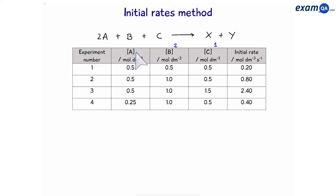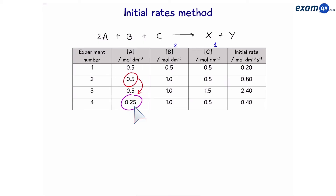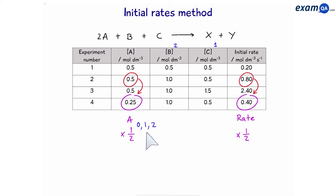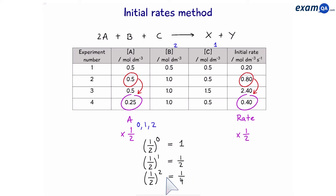Now let's work out the order of A. To work out the order of A, we need to know when A has changed. The only time A's concentration has changed is in reaction number 4, so we could compare experiments 1 with 4, or 2 with 4, or 3 with 4 — it doesn't matter which one you use. To make it easier, pick one in which A has changed and the others haven't. For example, comparing reaction 2 with 4: A has halved but B and C remain the same. A has halved and the rate has also halved. If it was zero order, half to the power of zero equals one. If it was first order, half to the power of one equals half. And if it was second order, half to the power of two equals a quarter. So A must be first order.